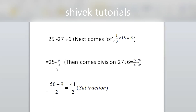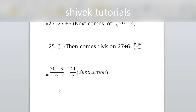Now we have to solve 25 minus 9/2. Since one term is a fraction and the other is not, we convert 25 to fraction form: 25 upon 1. Then cross multiply: 25 into 2 is 50, minus 9 ones are 9, upon 1 into 2 is 2. So 50 minus 9 is 41 divided by 2. The answer is 41/2.